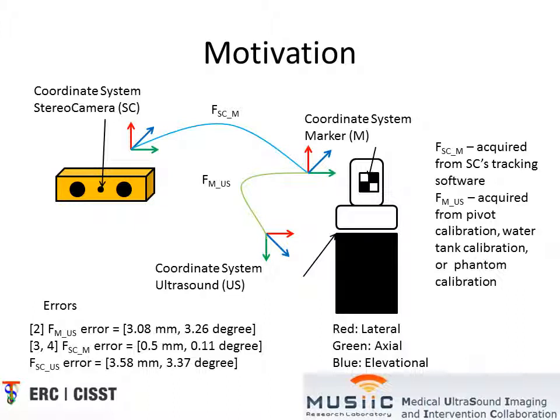The error in the stereo camera tracking software is sub-millimeter and is generally considered negligible in these applications. However, the transformation from the marker to the ultrasound must be acquired with a calibration process. Literature has shown that this process will generate errors of approximately three millimeters.